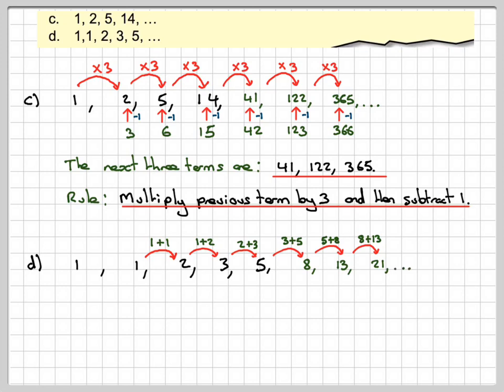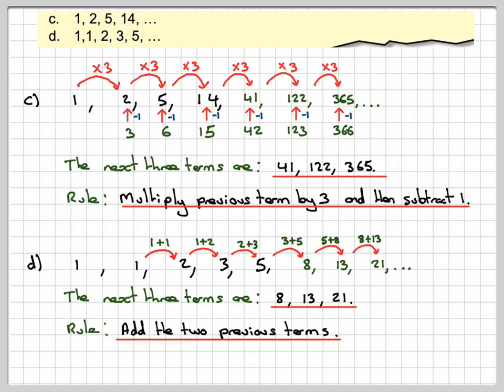That carries on. And therefore, the next three terms are going to be 8, 13, and 21. And the rule is that you add the two previous terms together. Now this sequence, normally with a 0 in front, is actually known as Fibonacci's sequence.